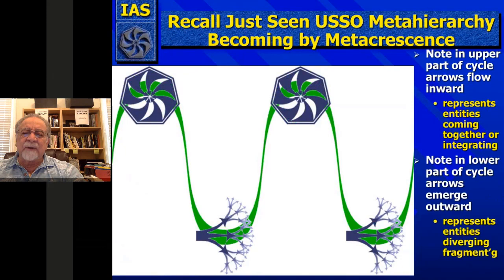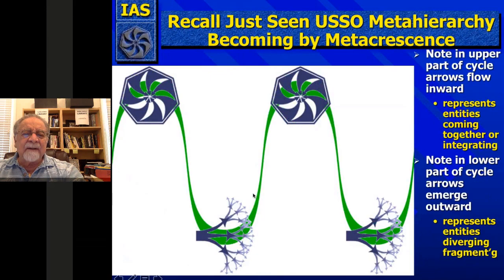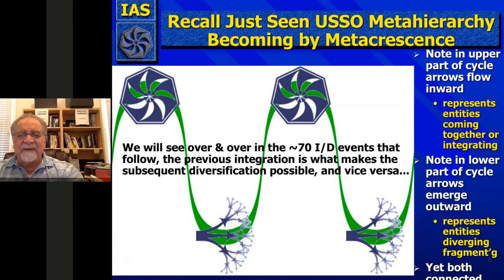Metacrescence is the result where you have this entire unbroken sequence of 70 such cycles. In the lower part of the cycle you see divergence or fragmentation of the original integration, based on this binding and body plan. This leads to a lot of diversity, which then has to be integrated for the next cycle — then integration, diversification again — and we go over about 70 such events connected by this emergence process of metacrescence throughout the cosmos.